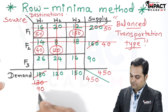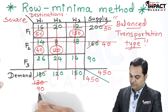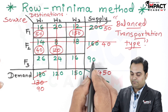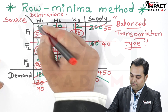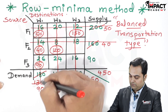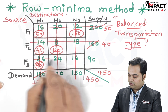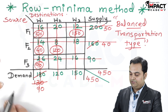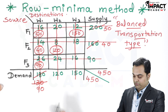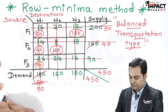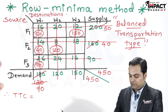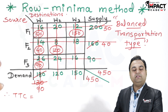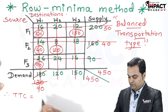The only remaining value is 26 in the third row. The demand is 90 and the supply is also 90, so the demand is completely met and the supply is also completed.